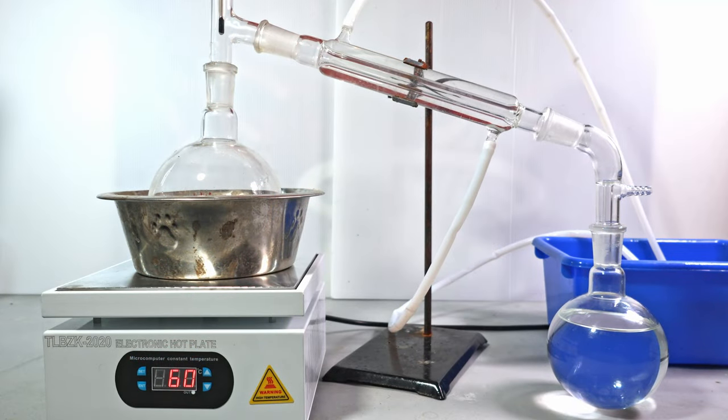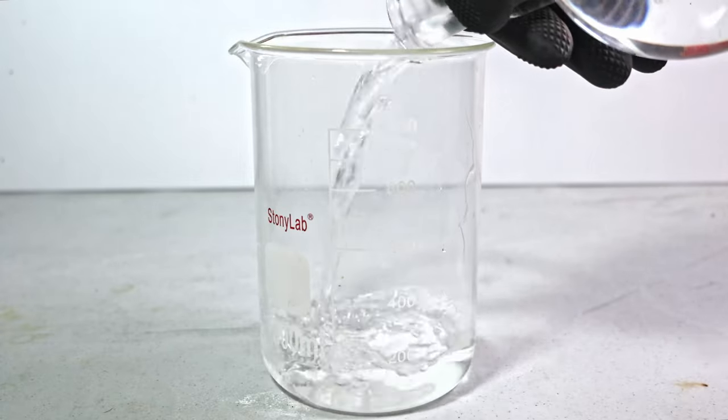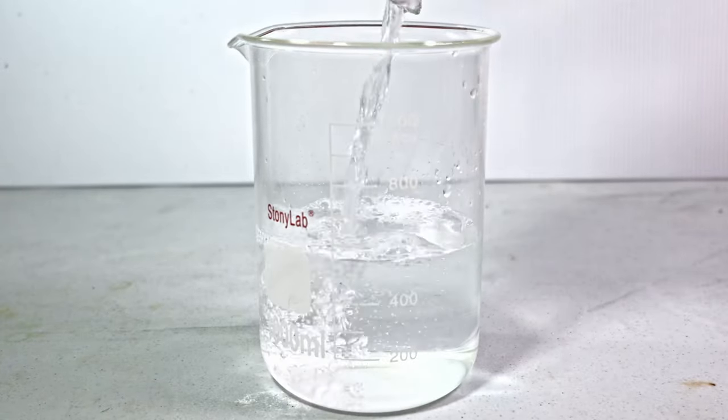Eventually, all the tert-butanol is distilled. My receiving flask is almost filled to the brim. In the boiling flask, a lot of my sieves are still caramel colored, which means they are full of water. In all, I got a little over 550 milliliters of tert-butanol.